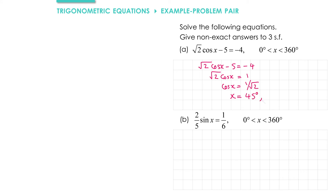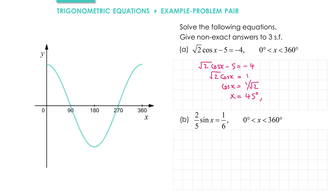Then we need to use the symmetry property to check for a second solution. Looking at the graph of cosine, if we have one solution at 45 degrees, we can see we get another one on the other side of the graph. To get that, we do 360 minus the first solution, which gives us 315 degrees.